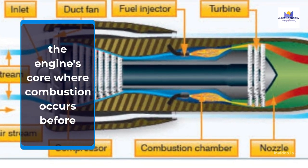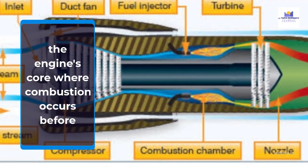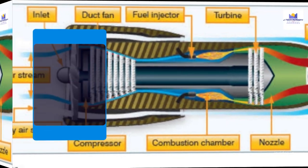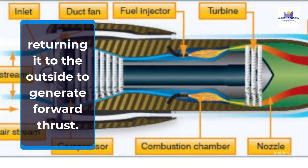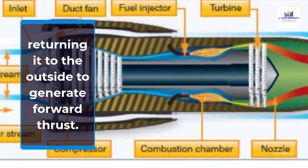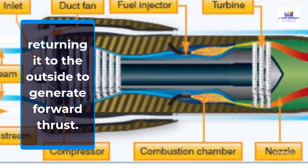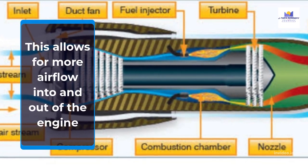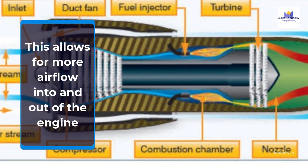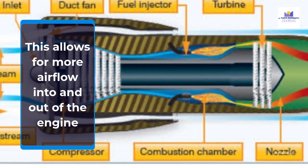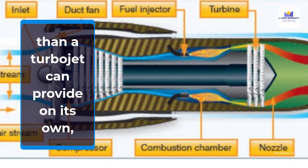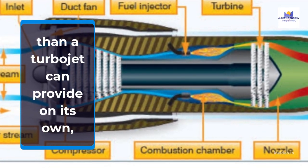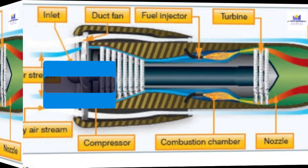Combustion occurs in the core before returning air to the outside to generate forward thrust. This allows for more airflow into and out of the engine than a turbojet can provide on its own, resulting in more efficient operation.